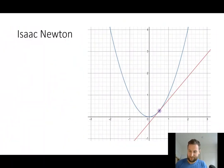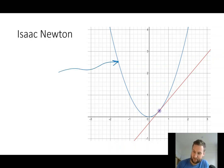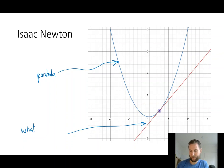So the problem Newton was looking to solve was pretty straightforward. He was really good at his geometry and really good at sketching. He knew all the properties of something like a parabola or a cubic function. But the question was — here I've got my parabola — what exactly is this tangent line? How do you come up with the equation?